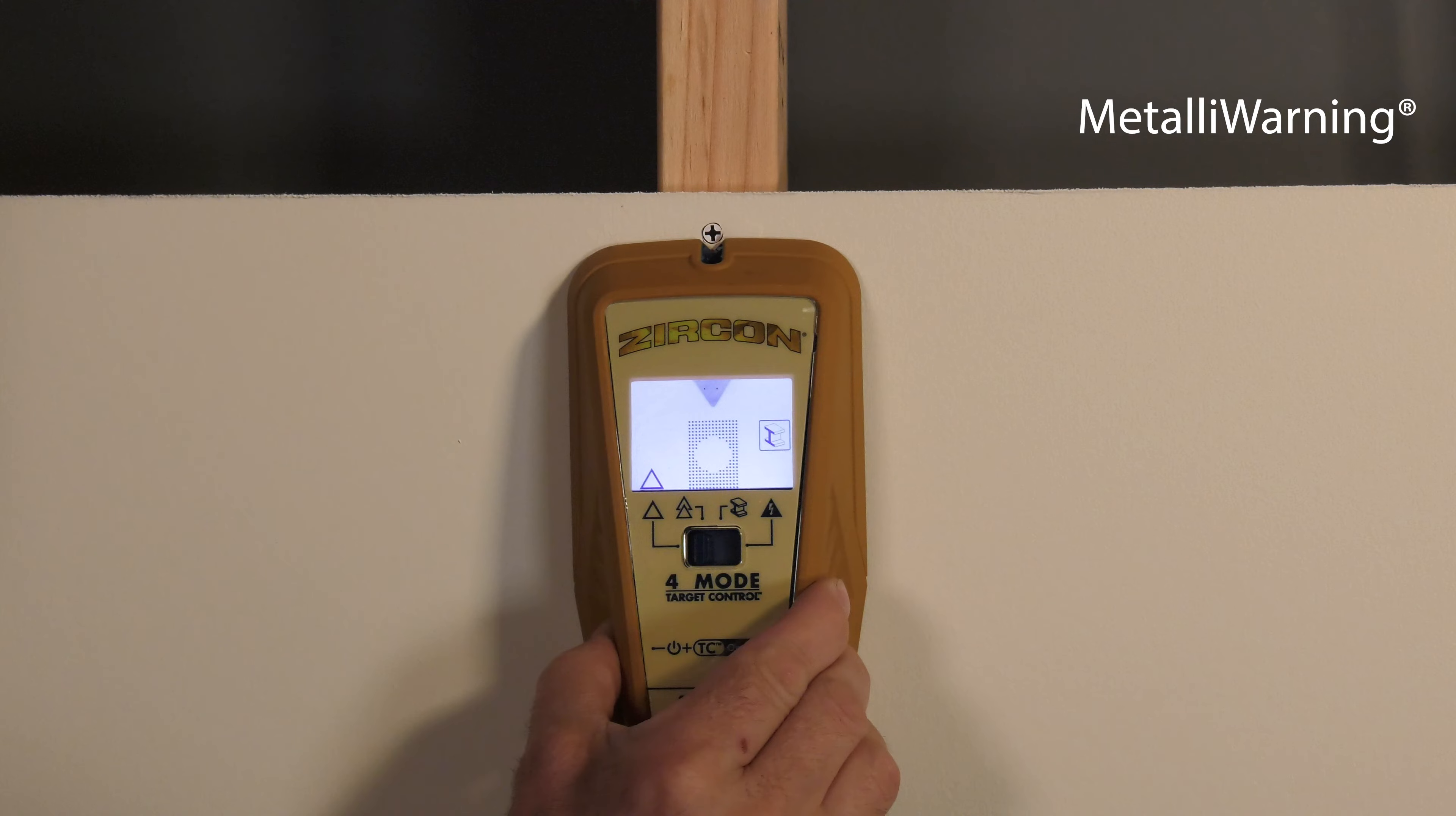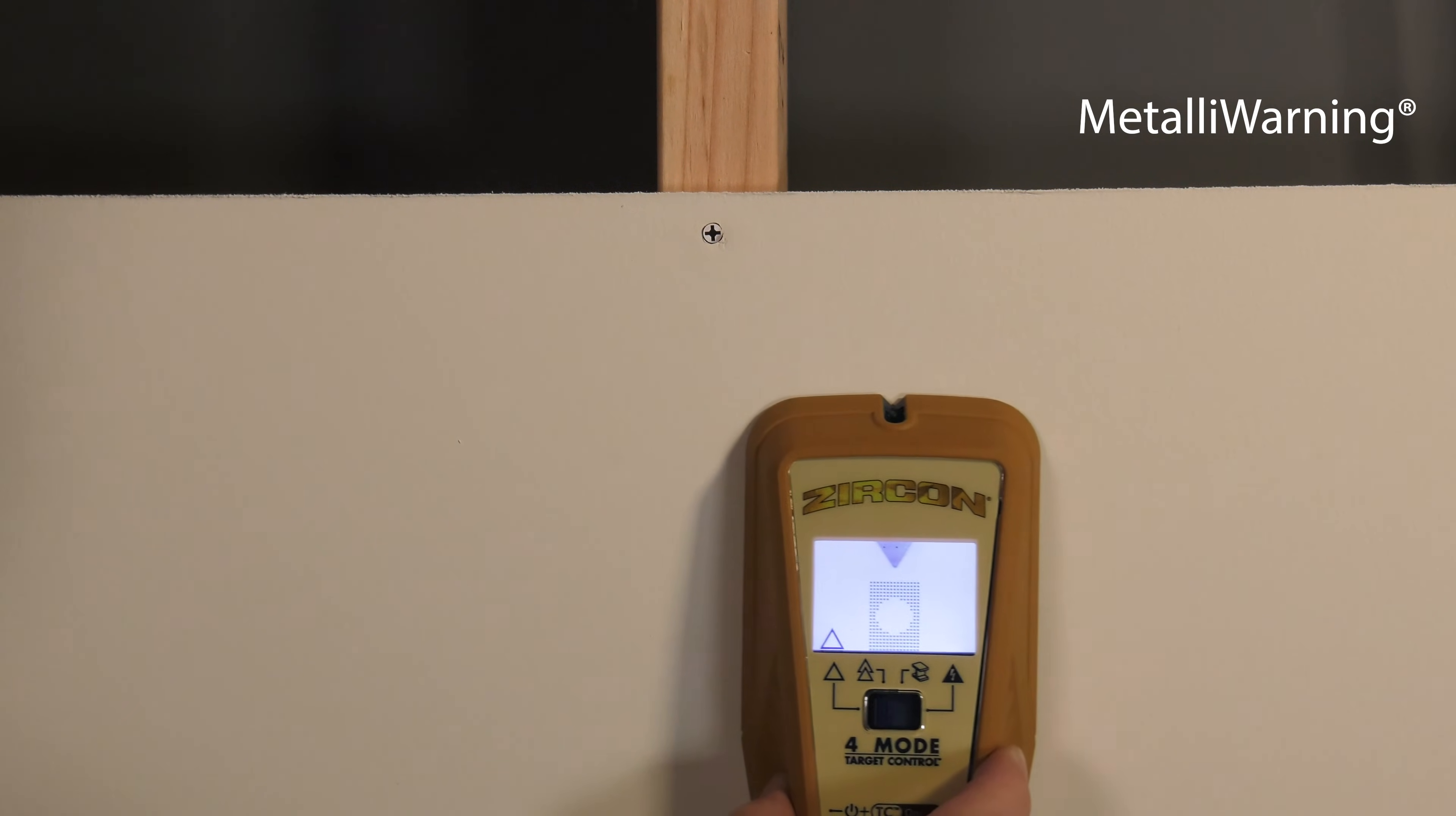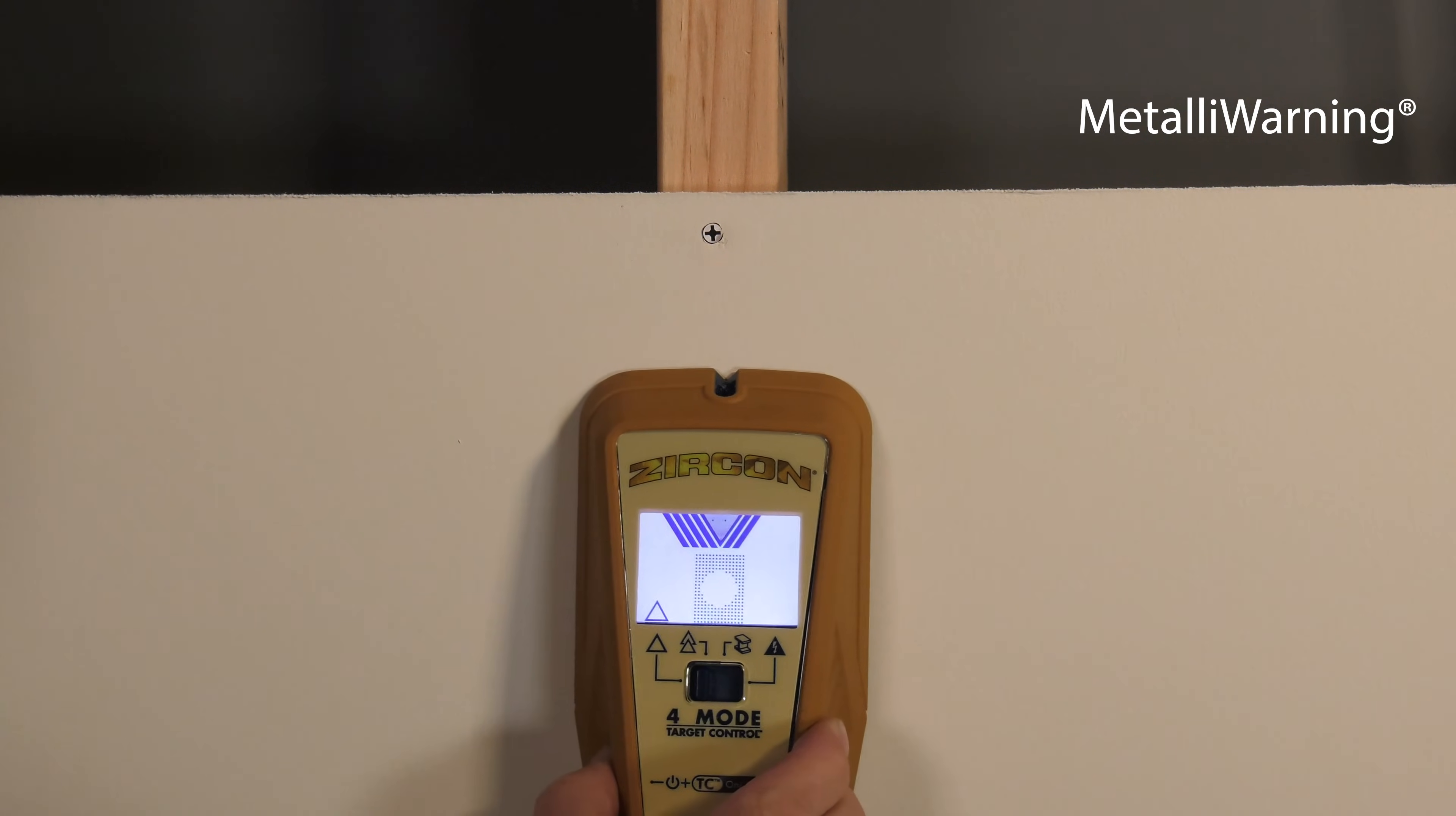In that case, a metal warning indicator will appear. Move the tool vertically down the wall and try your scan again horizontally across the wall.